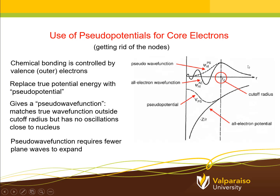Since it's the wave function in the regions outside the core electrons — the so-called valence electrons — that primarily determine the bonding properties of molecular systems, we can simplify our calculation and use the pseudo wave function instead of the all-electron wave function. When we do this, the pseudo wave function requires fewer plane waves to expand. Generally speaking, the more oscillations or wiggles the wave function has, the more plane waves it takes to capture that oscillation. So by using the pseudo wave function instead, we can use fewer plane waves in our expansion.